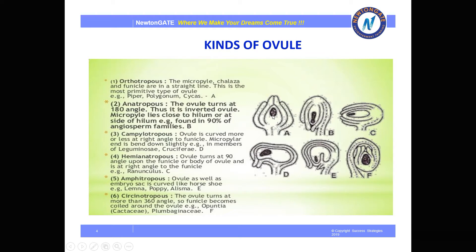The anatropous ovule is one where the ovule turns at 180 degrees, giving it an inverted shape. The micropyle lies close to the hilum. This type is found in 90% of angiosperm families and is called the anatropous ovule.